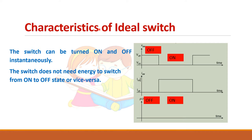Let us see the characteristics of an ideal switch. There are two things here. The switch can be turned on and off instantaneously — it will immediately transition from one state to the other, like from off to on or from on to off. Another thing is it does not need any energy to change from one state to the other.